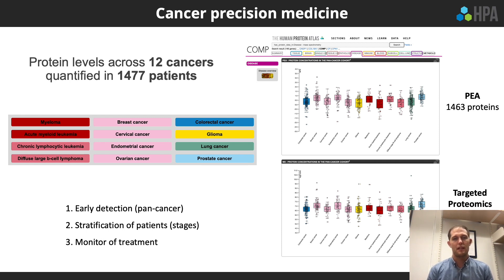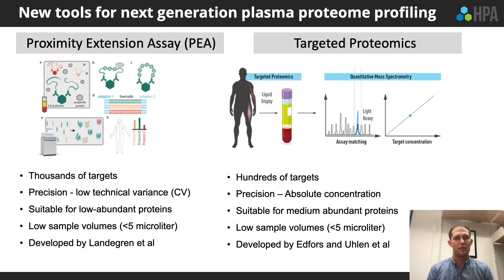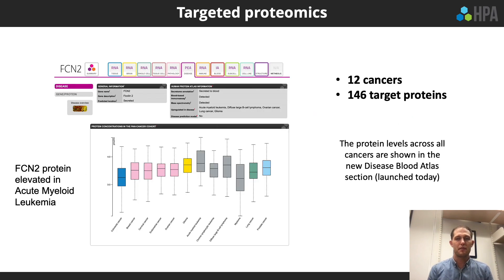Two emerging technologies are used to support advancements in precision cancer medicine: the antibody-based proximity extension assay and mass spectrometry-based targeted proteomics. Each can quantify proteins in multiplex with precise readout from just a few microliters of blood, handling large cohorts with great quantitative precision. In the targeted proteomics procedure, stable isotope-labeled protein fragment standards enable measurement of absolute protein concentrations in the medium-to-high abundant range with excellent analytical reproducibility — for example, absolute concentrations of FCN2, which is elevated in AML, quantified across all 12 cancers.